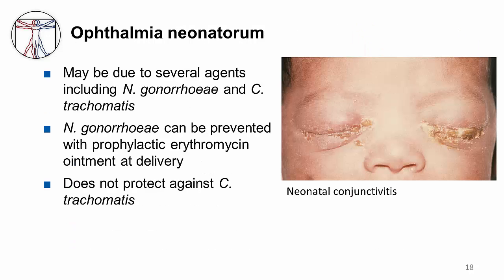Finally, a few words on neonatal conjunctivitis, or ophthalmia neonatorum. This was a newborn with gonococcal ophthalmia neonatorum caused by a maternally transmitted gonococcal infection. Unless preventative measures are taken, neonatal conjunctivitis will develop in 28% of infants born to women with gonorrhea. It affects the corneal epithelium causing microbial keratitis, ulceration, and perforation. We typically prophylax with erythromycin ointment at delivery.